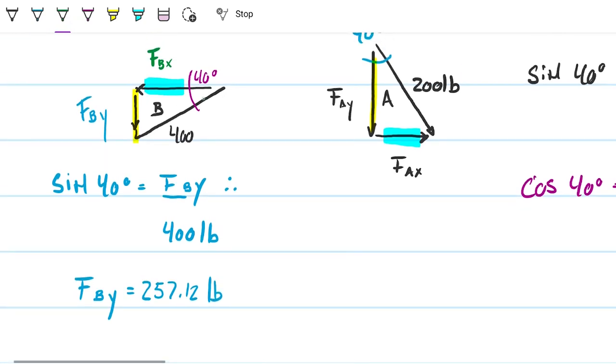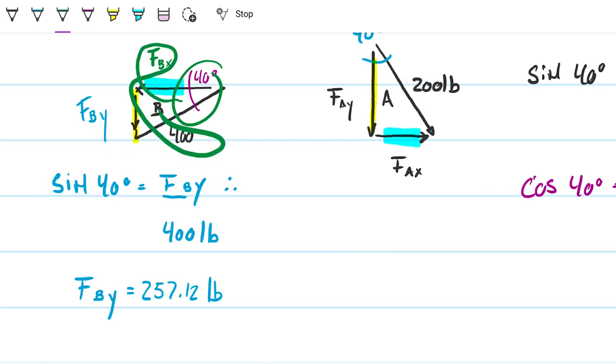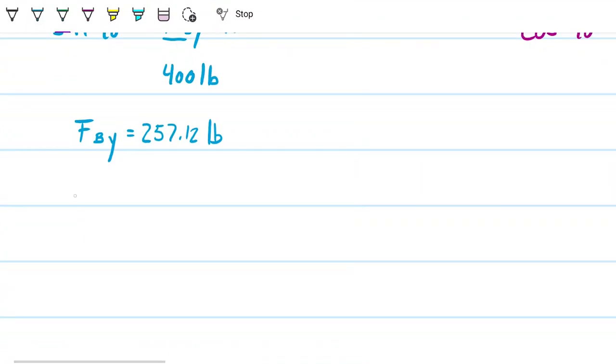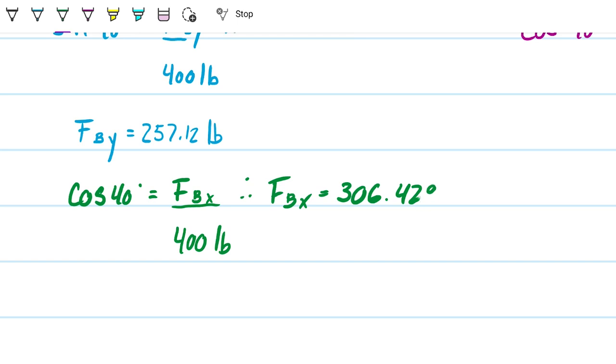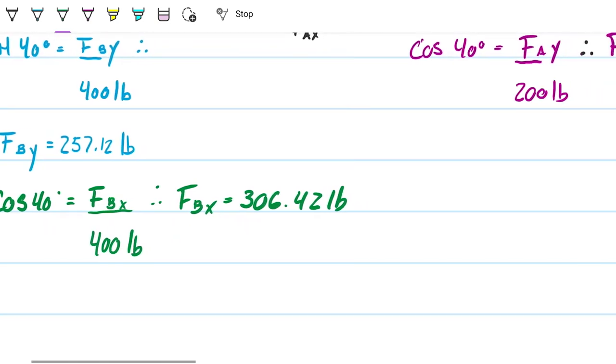And then last but not least, the cosine of 40 is going to be the adjacent divided by the hypotenuse. And therefore f bx equals 306.42 pounds. Beautiful.